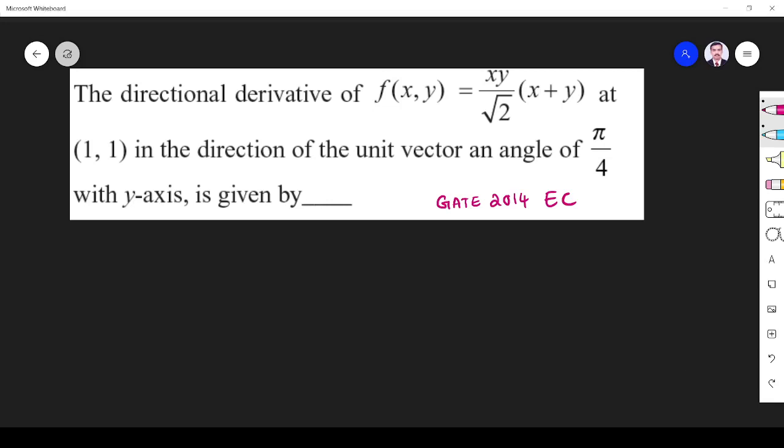Hi friends, in this video let us solve an electromagnetic related question in GATE 2014 EC paper. The question is: the directional derivative of f(x,y) = (xy/√2)(x+y) at (1,1) in the direction of the unit vector at an angle of π/4 with y-axis is given by ___.